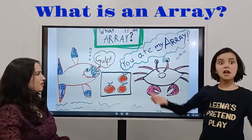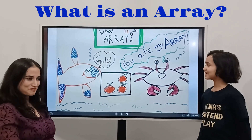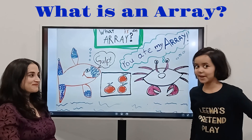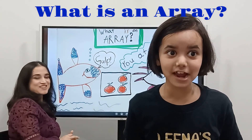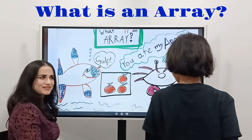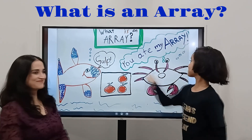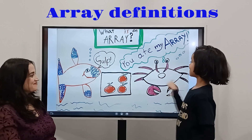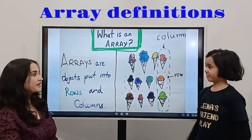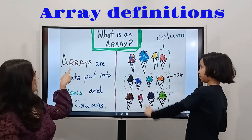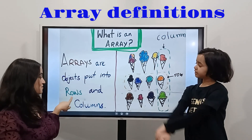What is an array? You ate my array, kids! What is an array? Let's go to the next slide. What is an array? Arrays are objects arranged into rows and columns.